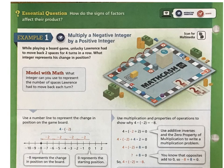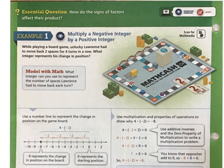Now let's take a look at the essential question and example 1. How do the signs of factors affect their product? Remember, factors are the numbers within that multiplication problem. These are your factors. And your product is the answer.